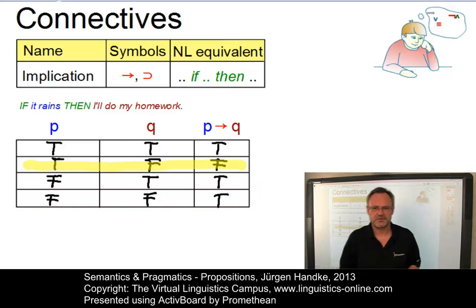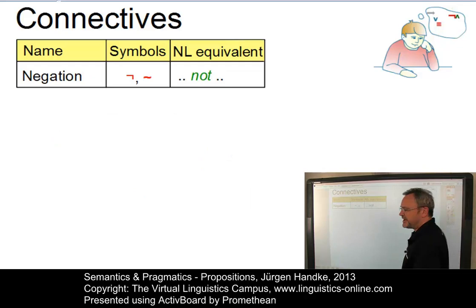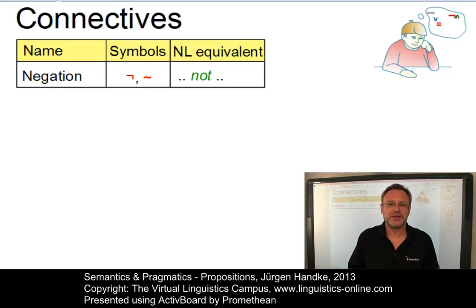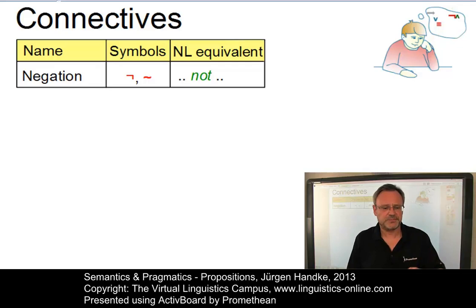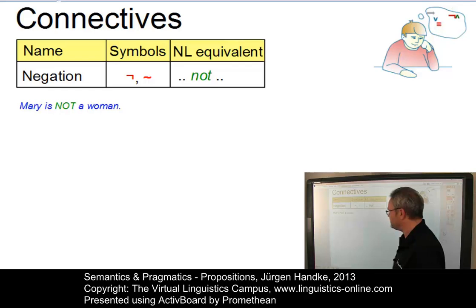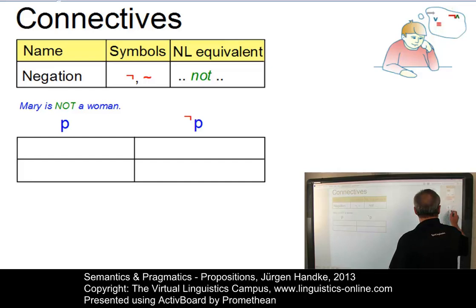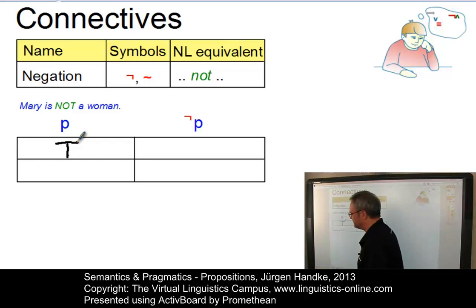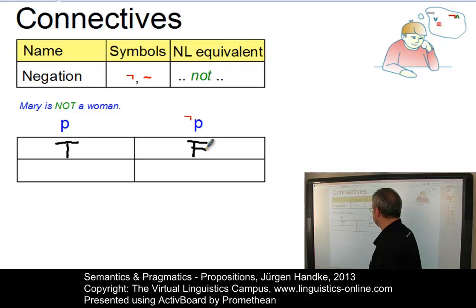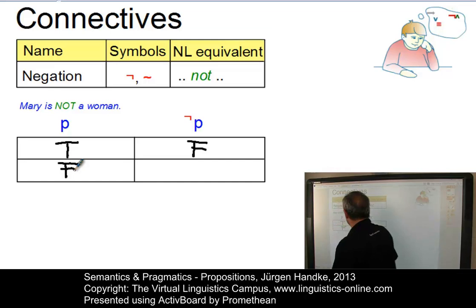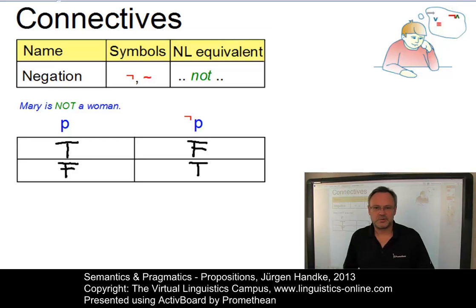Negation closely resembles NOT in natural language. It is used in logic to construct compound propositions with the opposite truth value of that of a simple proposition on which it operates. Assuming standard knowledge about the world, the proposition 'Mary is not a woman' gives us a simple truth table: if P ('Mary is a woman') is true, then NOT P must be false; and if P is false (so Mary is a man), then NOT P ('Mary is not a woman') would be true.